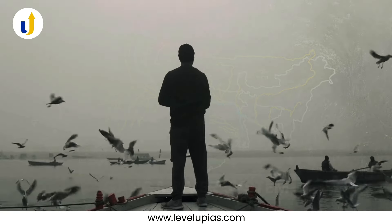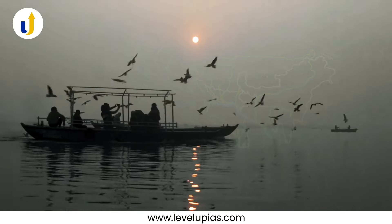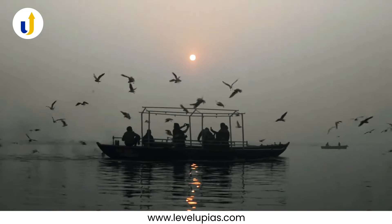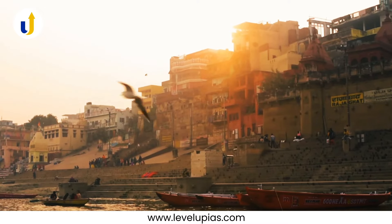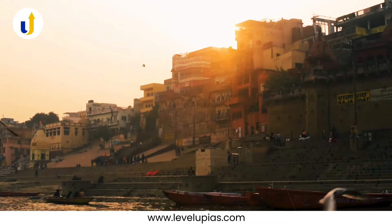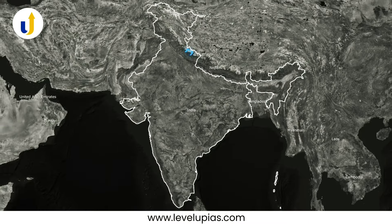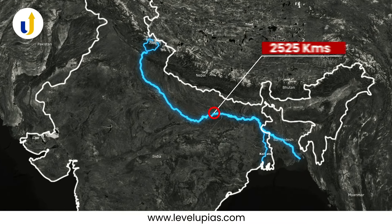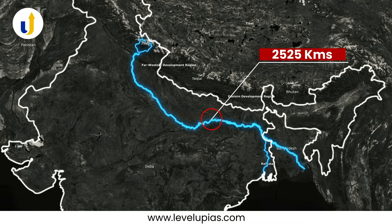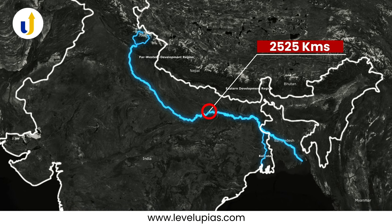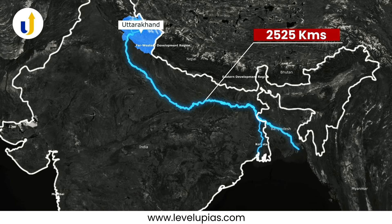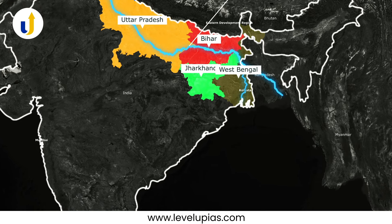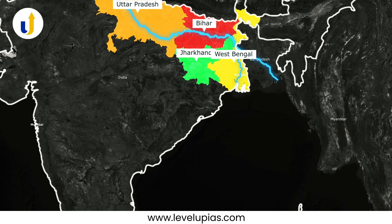The Ganga river system is the largest in India, having a number of perennial and non-perennial rivers originating in the Himalayas in the north and the peninsula in the south. The Ganga has a length of around 2,525 kilometers, passing through the states of Uttarakhand, Uttar Pradesh, Bihar, Jharkhand and West Bengal before falling into the Bay of Bengal.